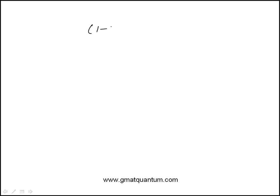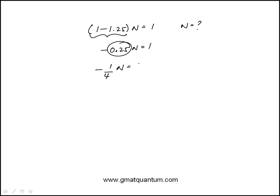We're given that 1 minus 1.25 times n is equal to 1. The question is: what is n equal to? We can simplify this — that's minus 0.25, and 0.25 is the same as a quarter, so we can rewrite it that way.